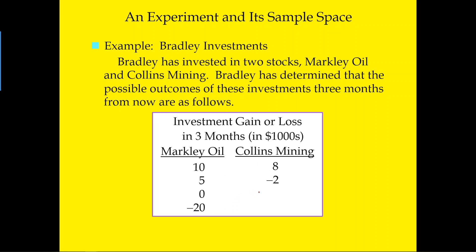Before we move on, how do you define this as an experiment? The answer is yes — Bradley invests in two stocks, Markell Oil and Coin Mining, and we have well-defined outcomes. Markell Oil has four possible outcomes: 10, 5, 0, and negative 20. Coin Mining has two possible outcomes: 8 and negative 2. However, this is a portfolio, not just one stock.